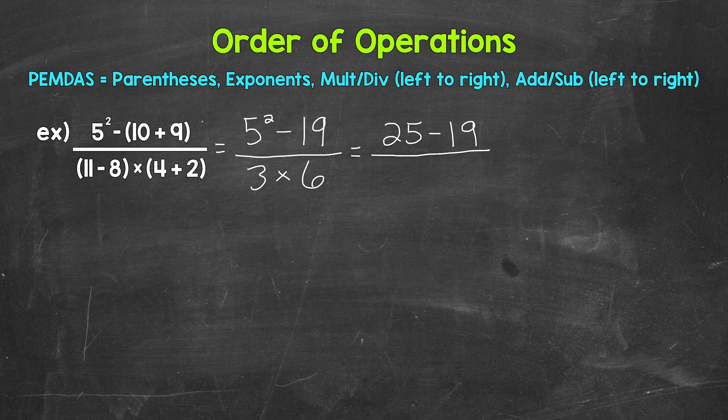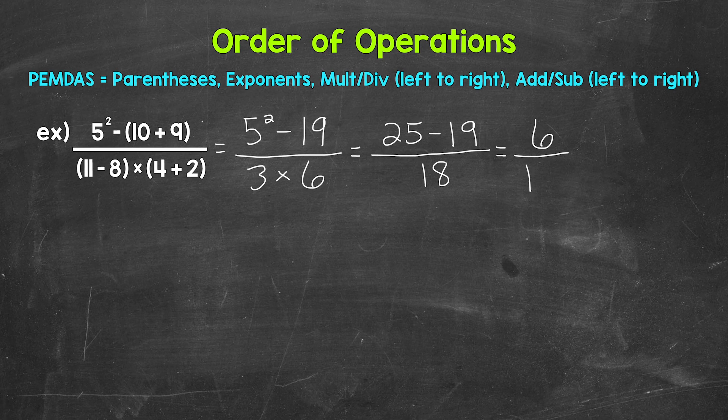And then below the fraction bar, we have 3 times 6. And that is 18. So we have 25 minus 19 over 18. Now we can subtract as far as the top goes. So 25 minus 19 is 6. So we end up with 6 over 18, 6 18ths.